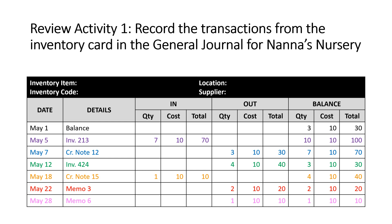For a challenge, take this completed inventory card for the Easy Grow Daisy Kits and turn it into general journal transactions, showing the debits and credits. Sketch out a general journal and have a go. For another layer, try sketching out the inventory account for the general ledger and picture what that would look like. These are all important skills in learning how to record in inventory cards and understanding how inventory cards relate to and connect with the general journal and the general ledger.